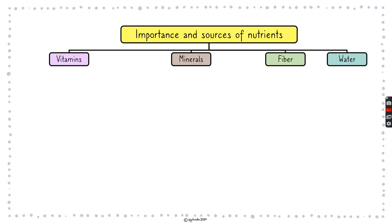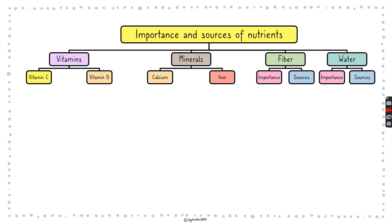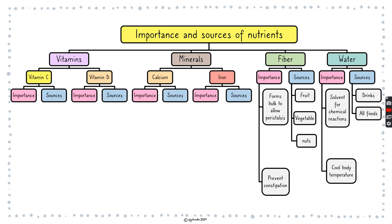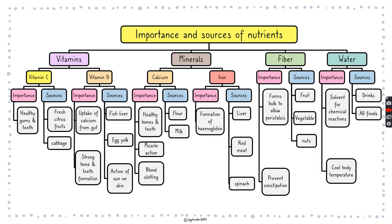Now let's look into the importance and sources of vitamins, minerals, fiber, and water. For vitamins, we're looking at vitamin C and D, and the minerals just calcium and iron. Vitamin C: the importance is for healthy gums and teeth, and you can find it in fresh citrus fruits and cabbage.